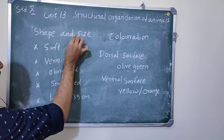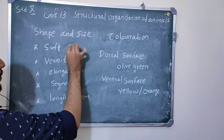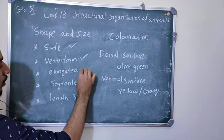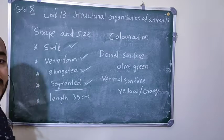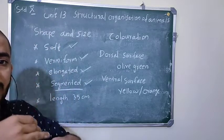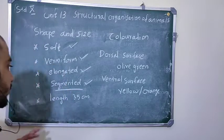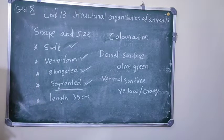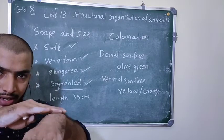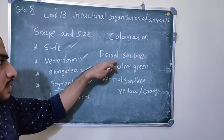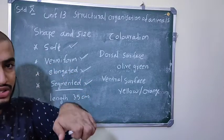The shape and size of the Indian cattle leech: their body is soft, vermiform-shaped, elongated, and metamerically segmented. They may have a length of up to 35 cm. Regarding coloration, the dorsal side (upper side) is olive green in color, and the ventral side (lower side) is yellow or orange in color.